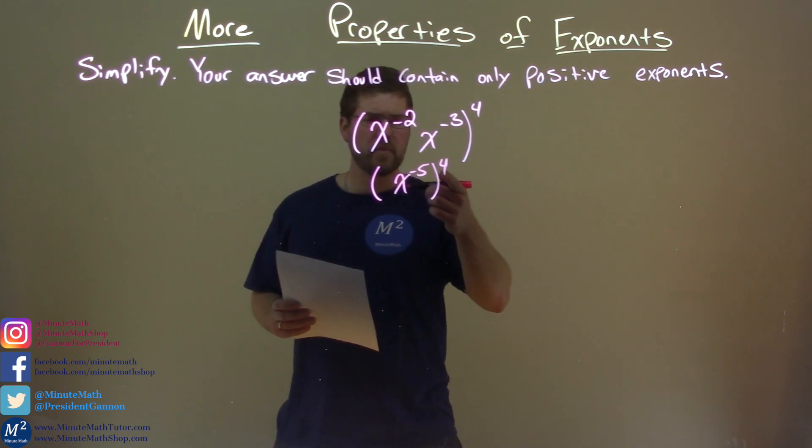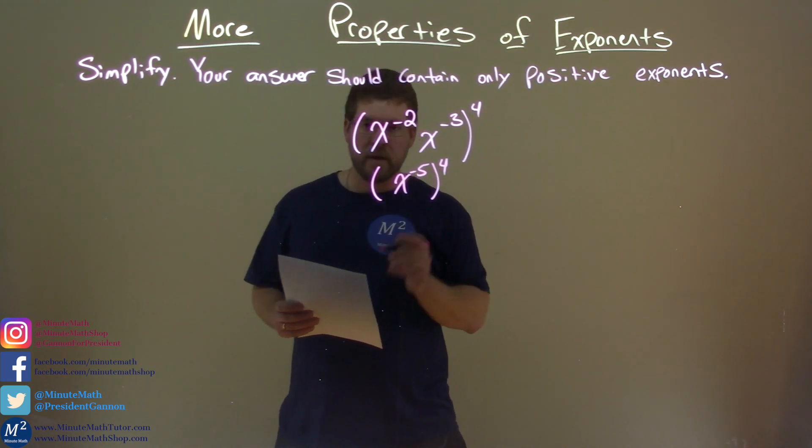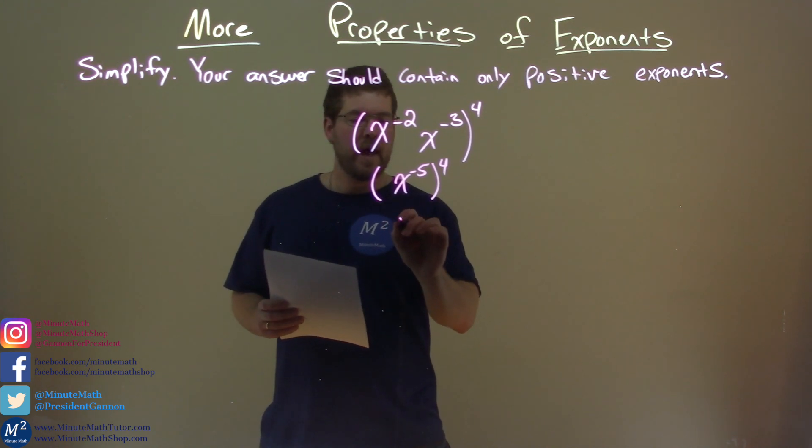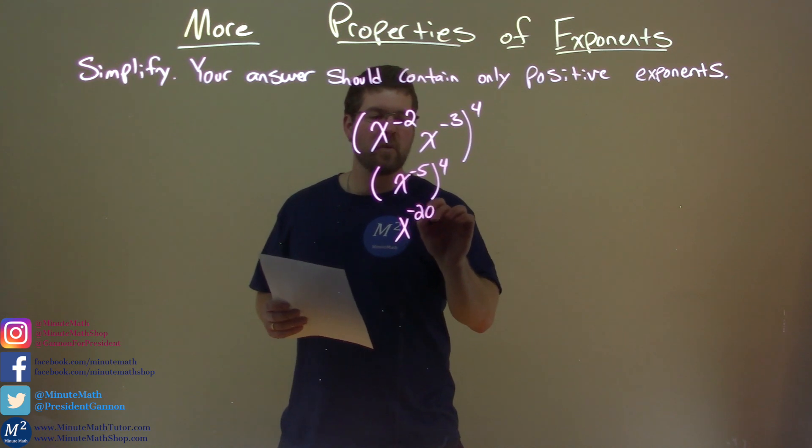Now let's continue. From here, we have the 4th power. Everything raised to the 4th power, that means we multiply these exponents. So, x to the power of negative 5 times 4, which is a negative 20.